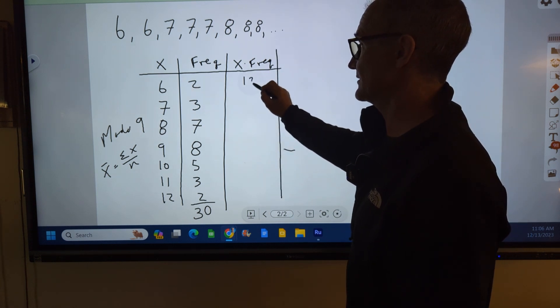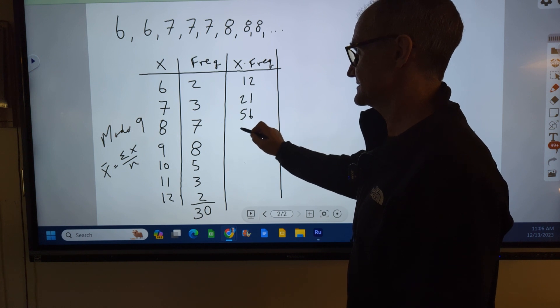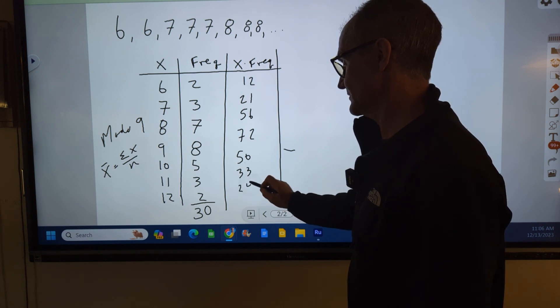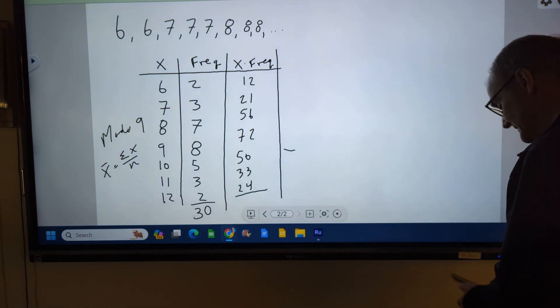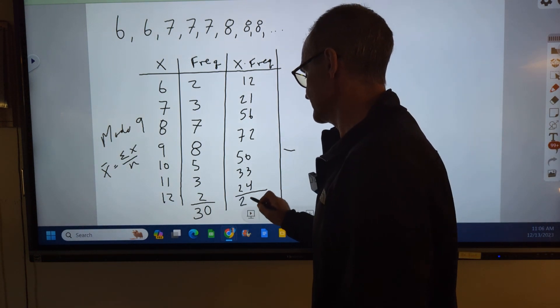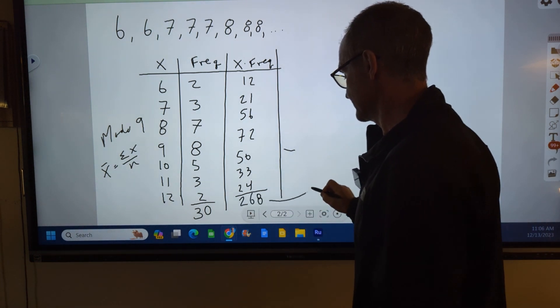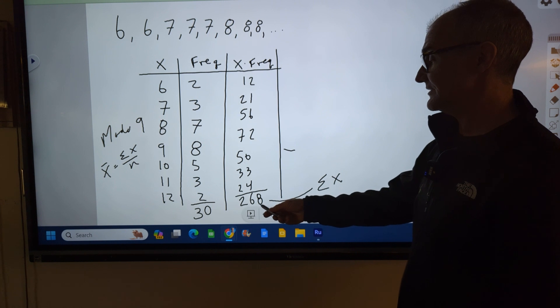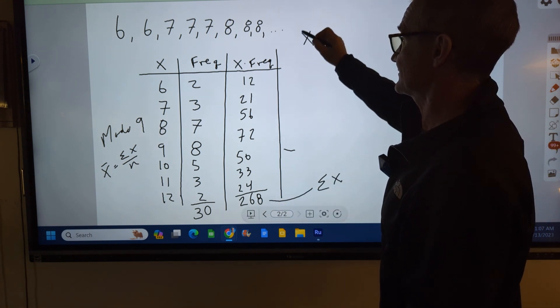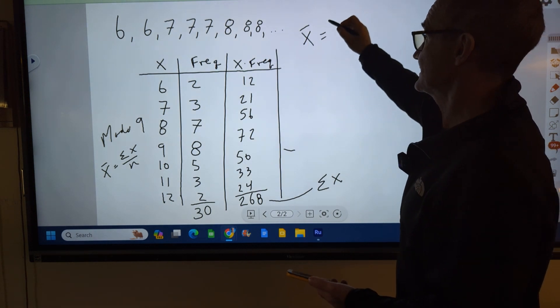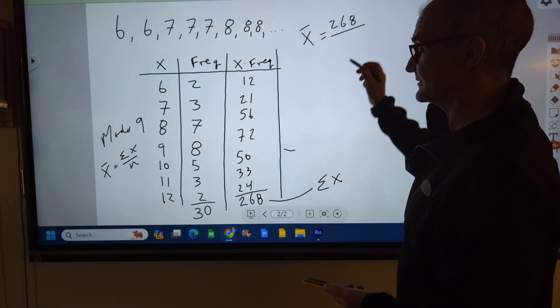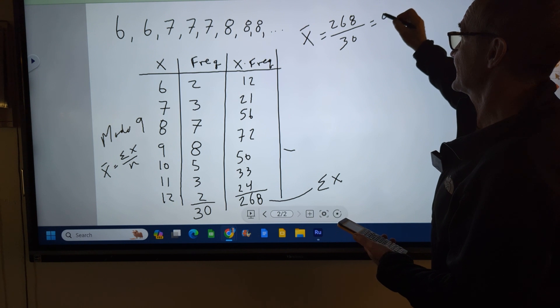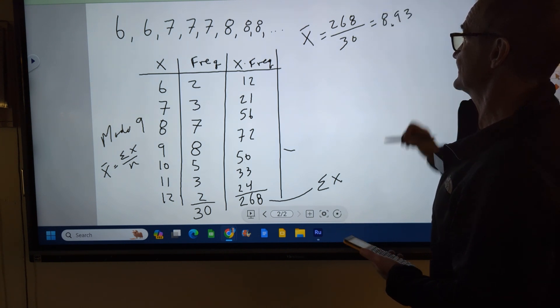So 6 times 2 is 12, 21, 56, 72, 50, 33, 24. I'm going to add that up. I did that on my calculator and I get 268. This 268 right here is the sum of all my values, right? I added up all 30 values and got 268. So my average X bar for the set of 30 data points is 268 divided by the number of values, 30. I did that on my calculator and I got 8.93. So there's my average.